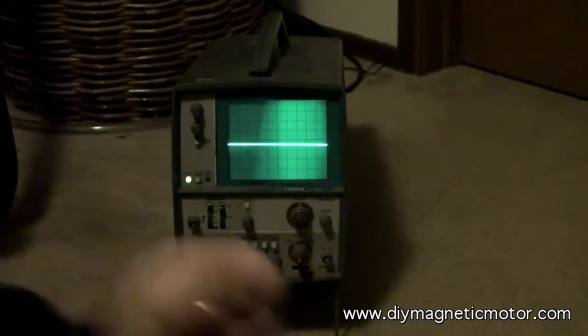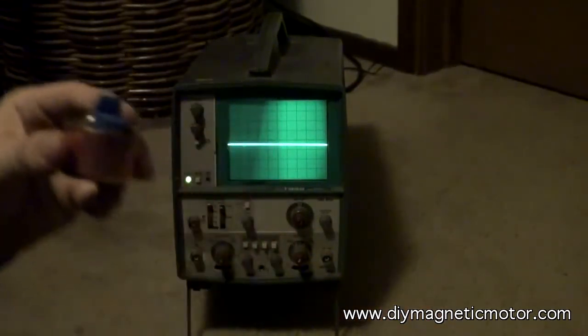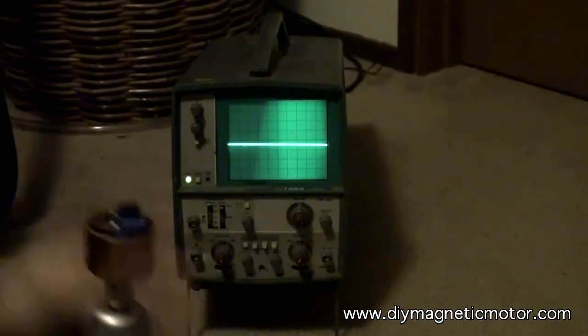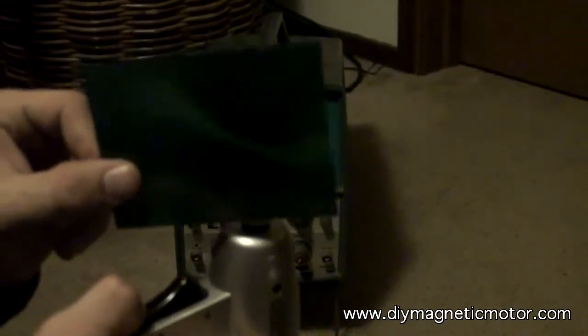But if we have a magnet at an angle inside of a cylinder, we get a variation, or a pulse.